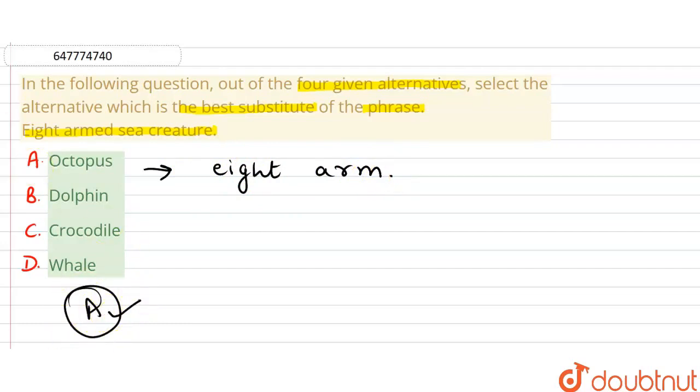Let's look at the other options. The second one, or the B part, is Dolphin. What is a Dolphin? Dolphins are small gregarious whales that typically have a beak-like snout and a curved fin on the back. They are small gregarious whales.